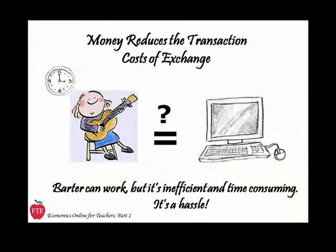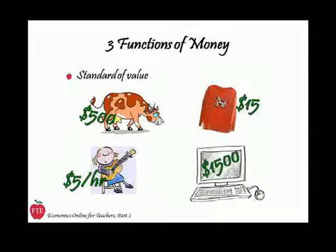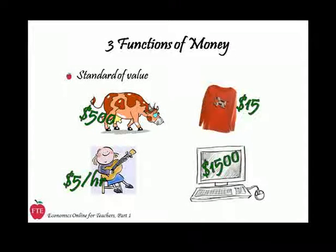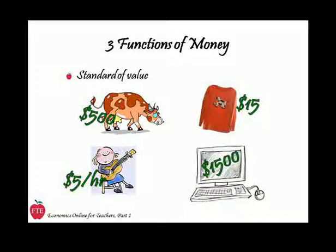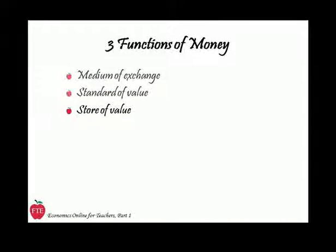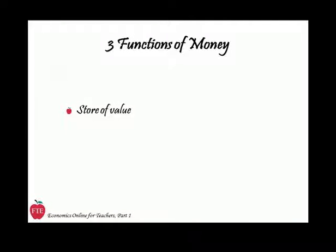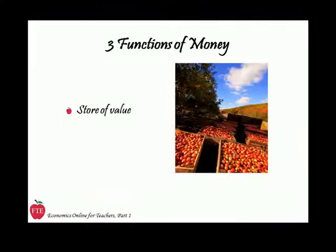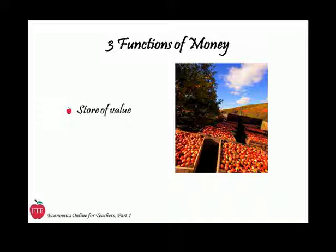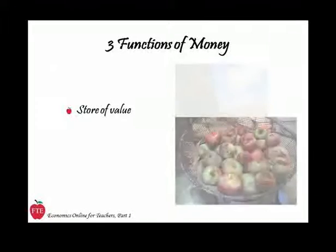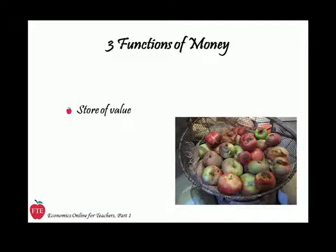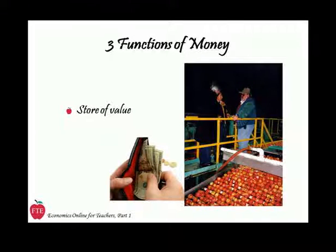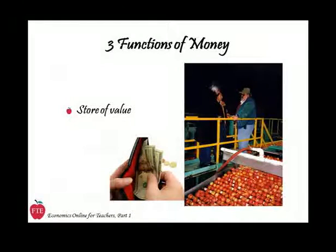Using money reduces those transaction costs. If cows, shirts, music lessons, and computers are all valued in standard money terms, the exchanges are easier and more exchanges are likely to take place. Third, money is a store of value. An apple grower creates value in a crop of apples, but apples don't store well. Imagine storing enough apples to purchase a car — by the time you're ready to buy the car, most of your value has rotted away. By selling the apples for money, a farmer translates their value into a form that can be easily stored.